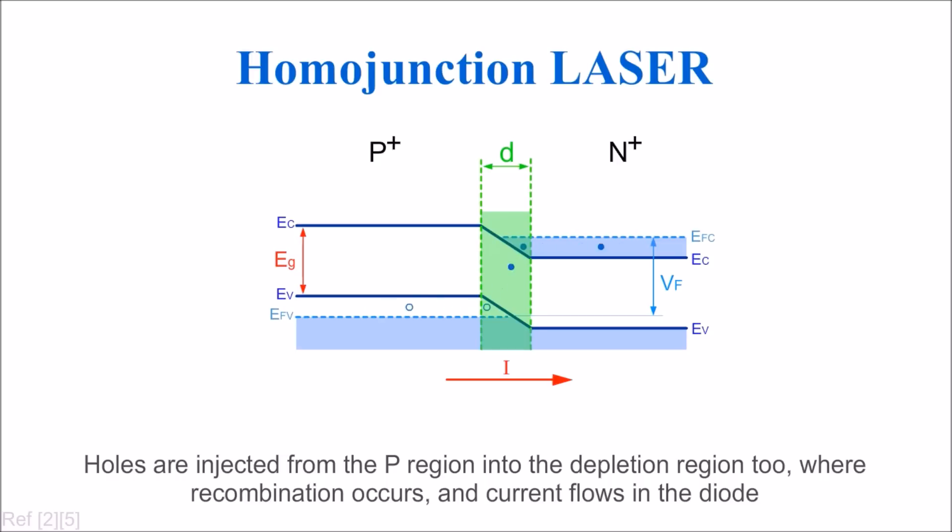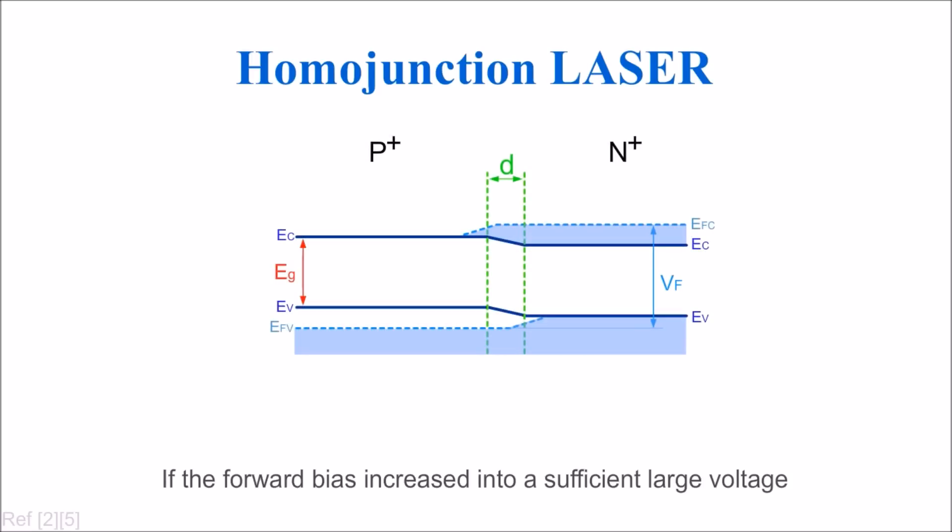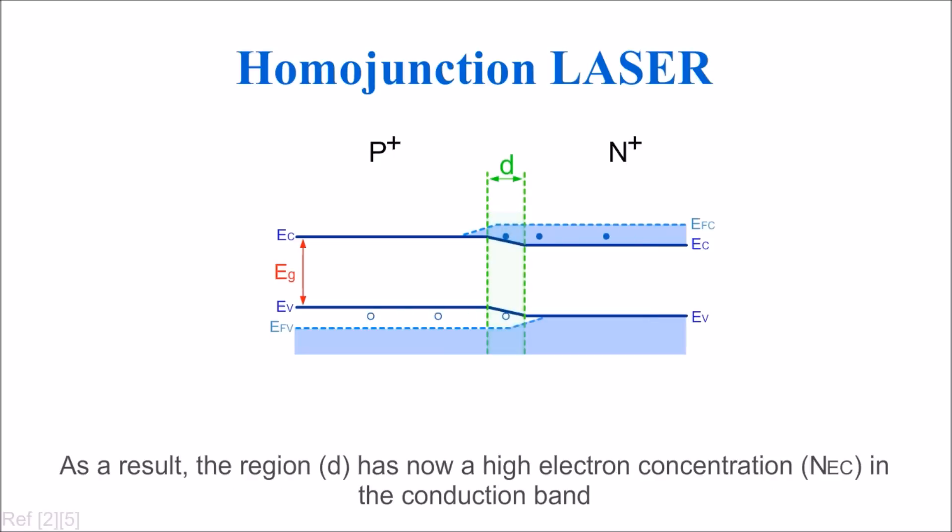If the forward bias is increased to a sufficiently large voltage, high injection of electrons and holes into the depletion region occurs. As a result, the region d now has a high electron concentration nEc in the conduction band.